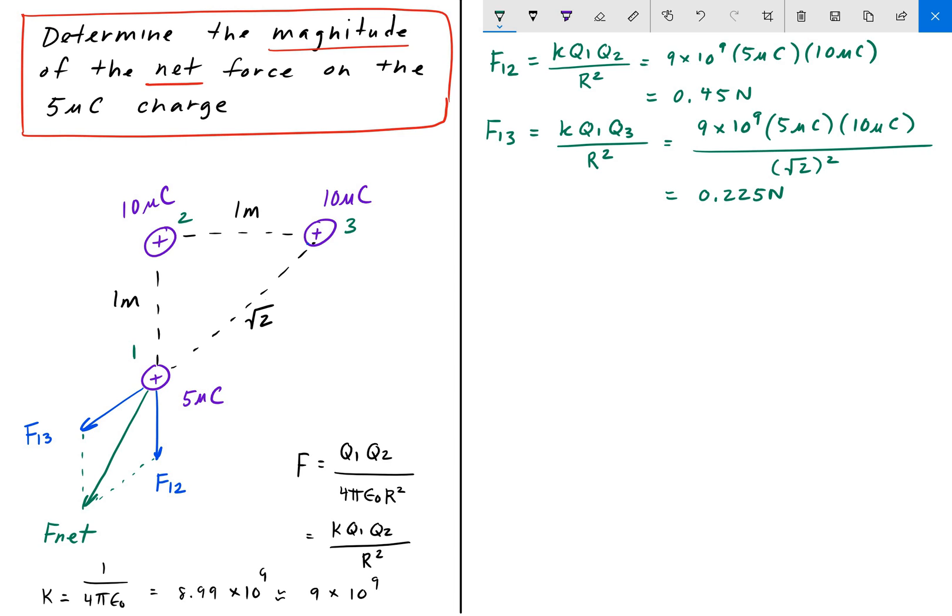So that gives us the magnitude of each individual force. And now we've got to break these up into their components in order to add up their components and then ultimately get F net. So we'll start with F12, its X component. Now if we put the 5 microcoulomb charge at the center of a coordinate system, we'll do that now. We'll pretend that's in the middle there. That is the X component, the X direction, and up and down is the Y direction with the 5 microcoulomb charge in the center of 0, 0.